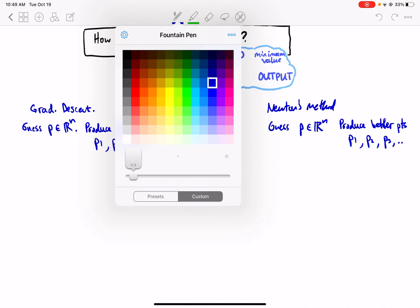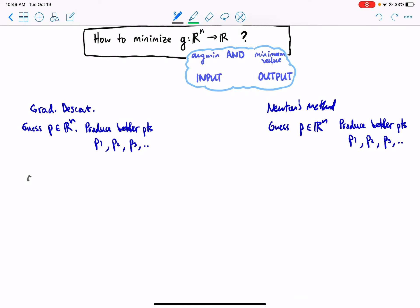How? Well, gradient descent linearizes at the point P using this linear approximation formula, whereas Newton's method linearizes the gradient map at the point P using this linear approximation formula.